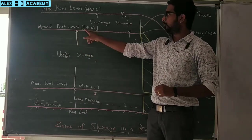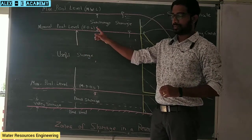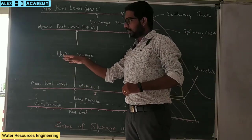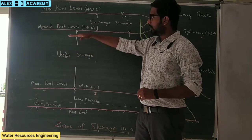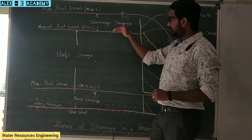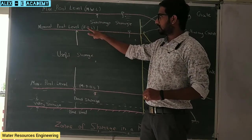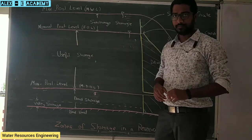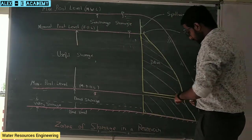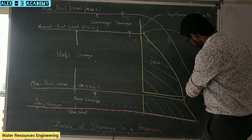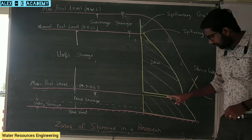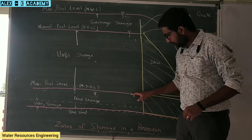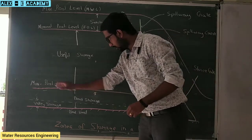This is the full reservoir level. The dam is on the upstream side. We need to consider the reserve power. If we have a full reservoir level, that corresponds to the normal pool level. The other level is the sluice scale.